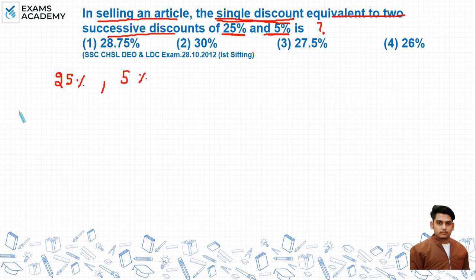That means net discount % = x + y - (xy/100)%.